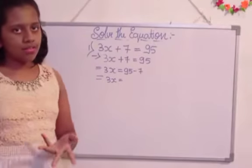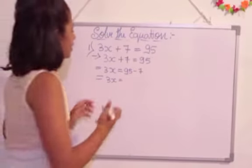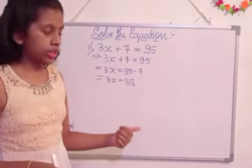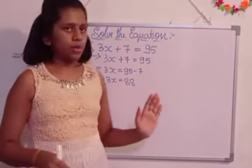How much? 95 minus 7 we get 88. So 3x is equal to 88.